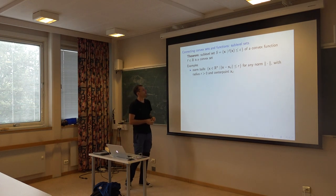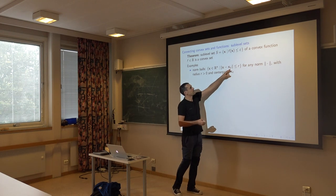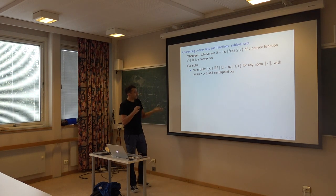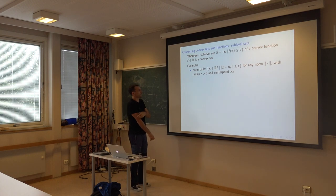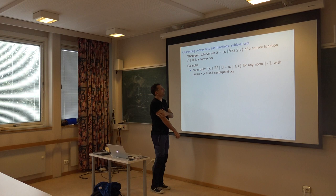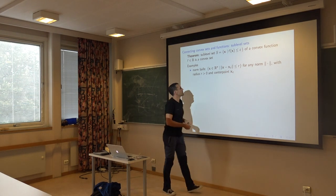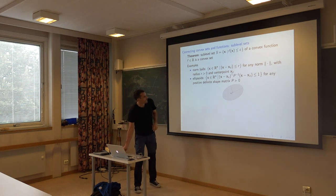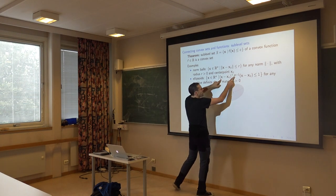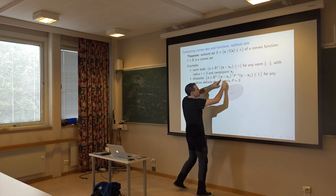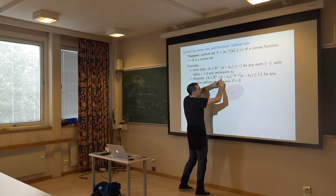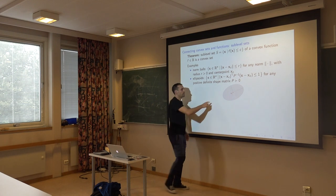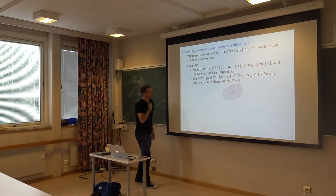Some examples of sublevel sets: norm balls — all x at distance less than or equal to r from some reference point xc under any norm — are sublevel sets of the norm function, and they're convex. Building a quadratic function with P positive definite: P⁻¹ is also positive definite. The sublevel set for c=1 cuts the quadratic form, giving an ellipsoid, which is convex. Also, the set of (x, t) such that the two-norm of x is less than t gives a non-smooth but still convex set — a cone.